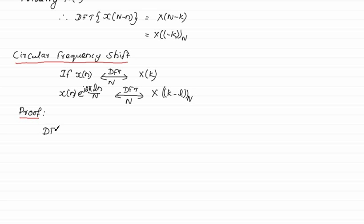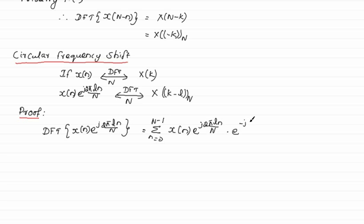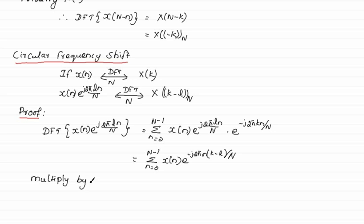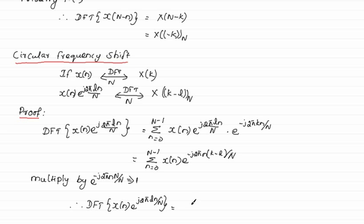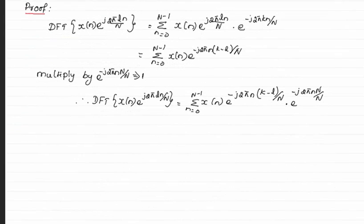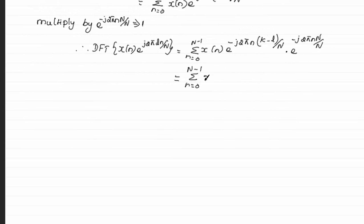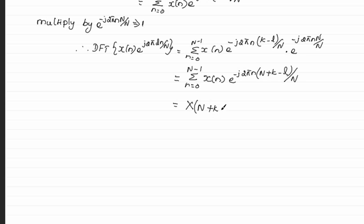Let us see the proof. We know the DFT of x(n). We are going to take the DFT of x(n) times e to the power j 2π l·n/N, replacing x(n) accordingly. In the next step, we combine both e-power terms, then multiply by e to the power minus j 2π n·N/N, which equals 1, so it doesn't change the equation. Combining both e-power terms gives X(N+k-l), which is equal to X(k-l) modulo N — it is circularly frequency shifted, and the property is proved.